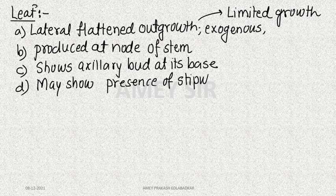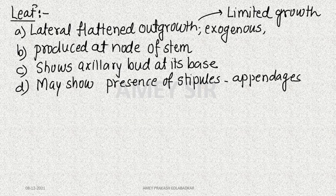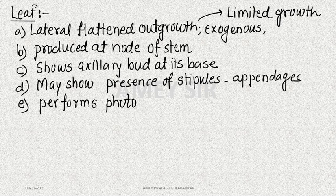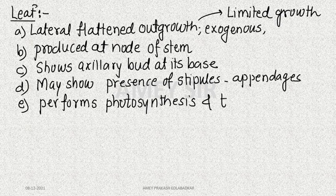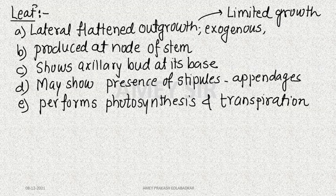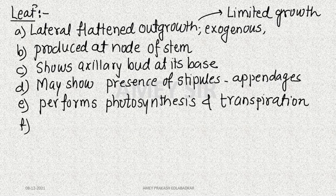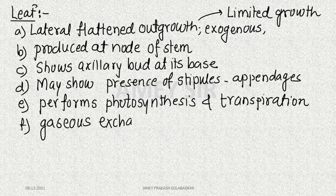The leaf may show the presence of stipules as appendages on both sides. Most importantly, it performs photosynthesis. Along with photosynthesis, it is involved in transpiration. It also shows a characteristic venation pattern and helps in gaseous exchange during photosynthesis as well as respiration.